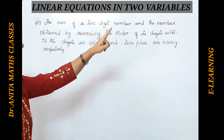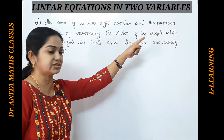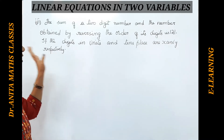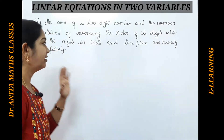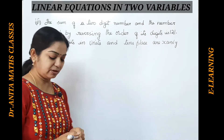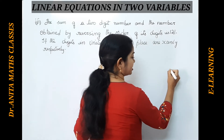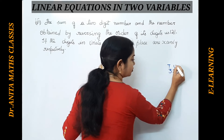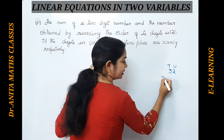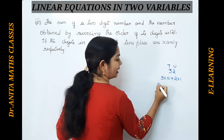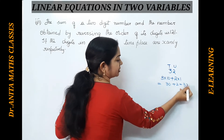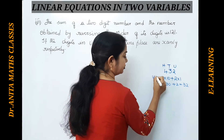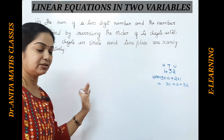Sixth problem: the sum of a two-digit number and the number obtained by reversing the order of its digits is 121, with the units place digit as X and tens place digit as Y. For example, for the number 32, the tens place is 3 and units place is 2, so its value is 3×10 + 2×1 = 32. This is how place values work.